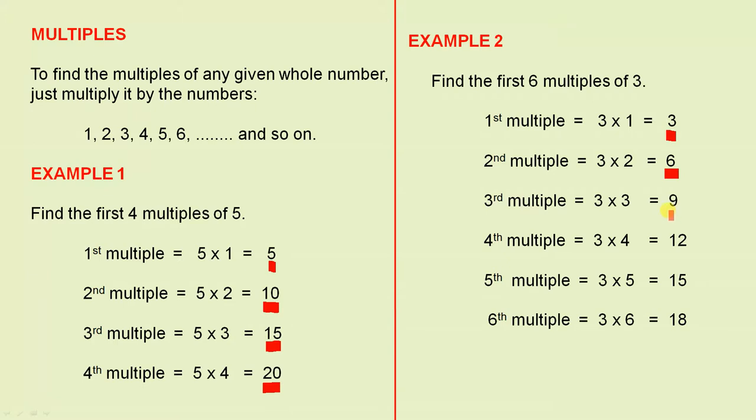The third multiple, 3 times 3 is 9. The fourth multiple, 3 times 4 is 12. The fifth multiple, 3 times 5 is 15. And the sixth multiple, 3 times 6 is 18.